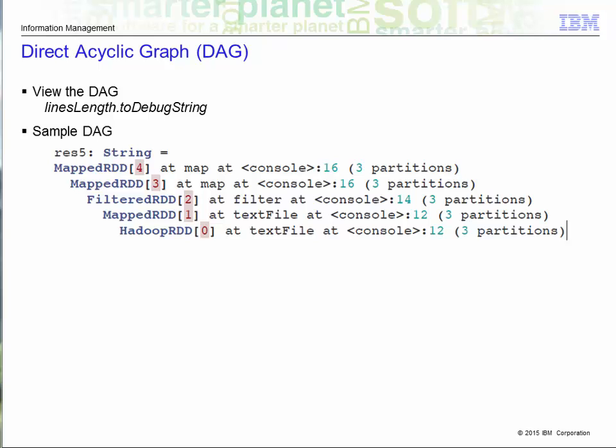In the sample of the DAG shown on this slide, you can see that it starts as a text file and goes through a series of transformations such as map and filter, followed by more map operations.